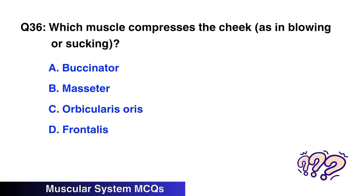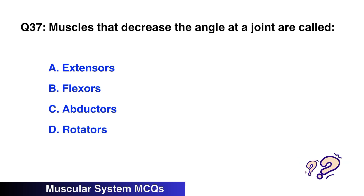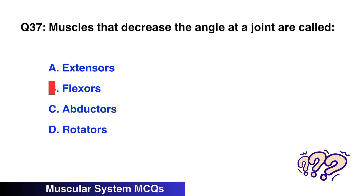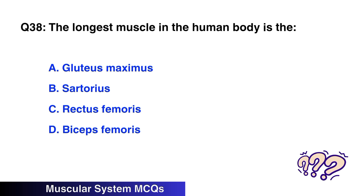Question No. 36: Which muscle compresses the cheeks in blowing or sucking? The right option is A: Buccinator. Question No. 37: Muscles that decrease the angle at a joint are called — the right option is B: Flexors.